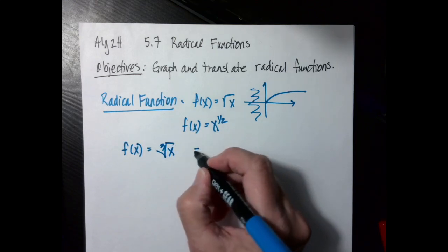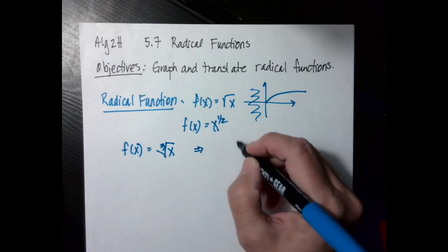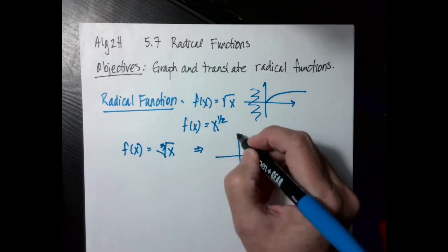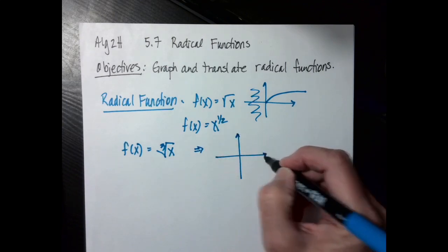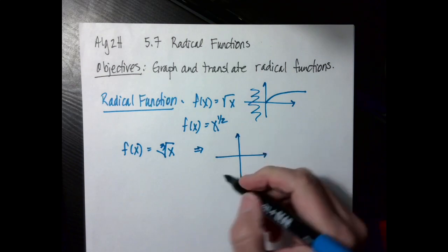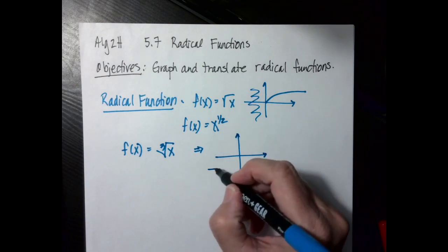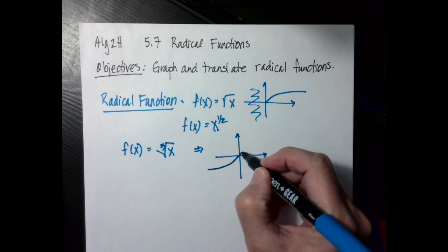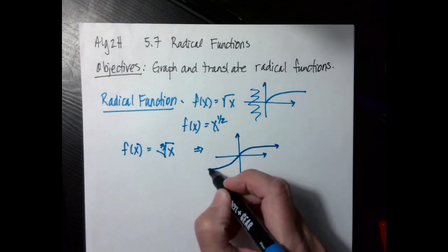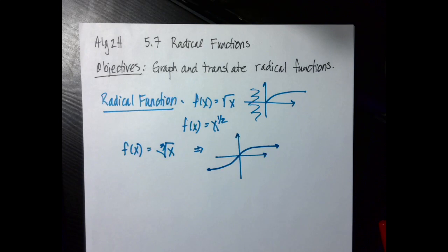The cube root graph looks a little bit different, because I can take the cube root of a negative, so it looks something like this going through both sides. That's kind of cool.